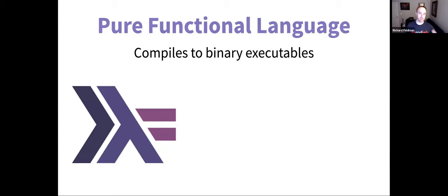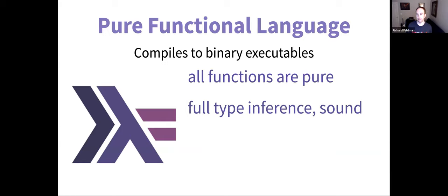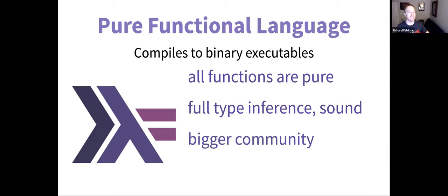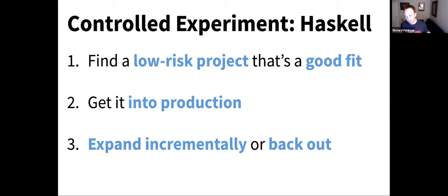Haskell is a pure functional language that compiles to binary executables. Unlike Elixir, it does not allow side effects — much like Elm, all functions are pure. It has full type inference, sound types, and a bigger community than Elm. I cannot say it has the nicest package manager — Rust is number two of the nicest package managers I've used, and Haskell is not number three. It does have a bigger ecosystem than Elm. And Haskell is definitely not in contention for nicest error messages.